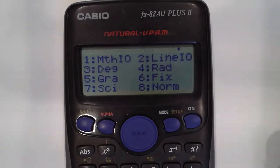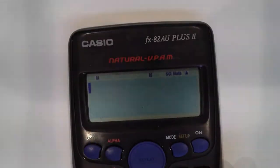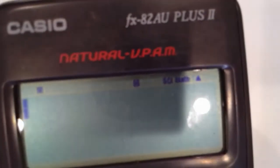Now number 4 you can see is radians, so if you press number 3, we've put it into degrees mode and as you can see it's changed to a D.